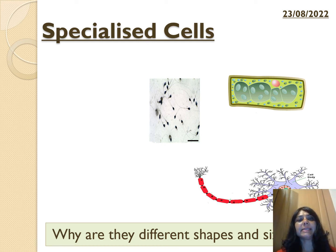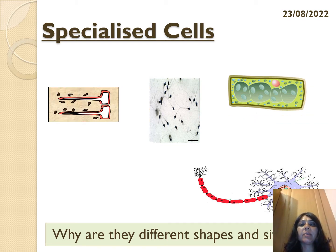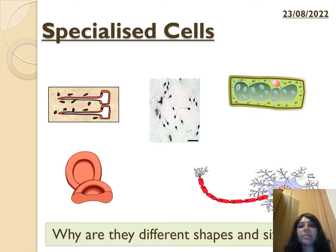Hello, this is a key stage 3 topic. We're looking at specialized cells, which falls within the cell topic as a subtopic. What we're looking at is: what are specialized cells, and how do they adapt to become specialized? If you look at the different pictures on the screen, what are the different shapes and sizes? We're going to look at that in detail today.